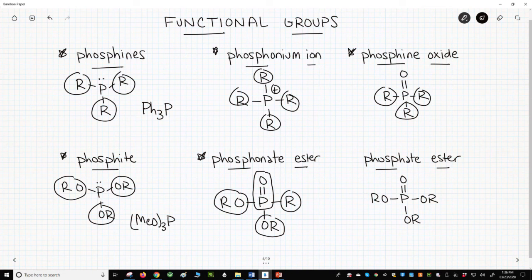Finally, if we have a P double bond O and three OR groups, it is a phosphate ester.